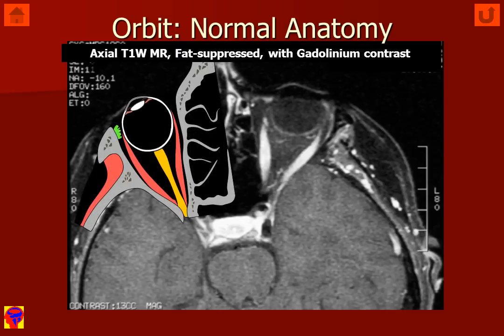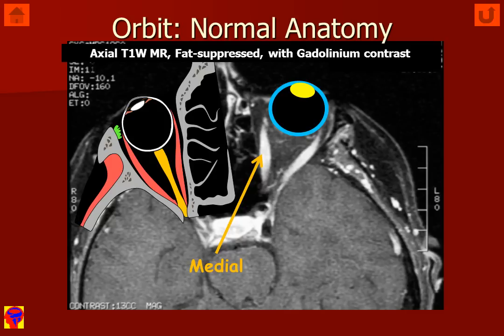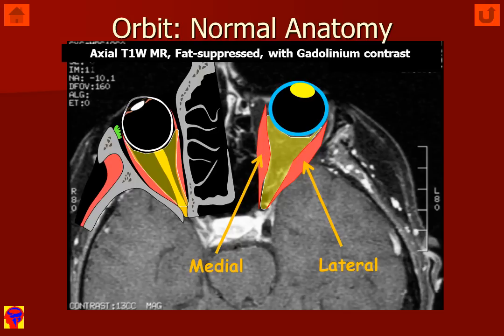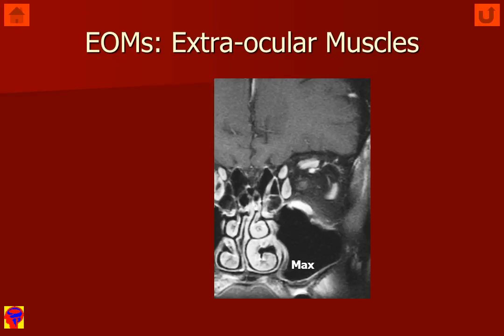Superimposed, we have a drawing of the patient's orbit. We can see the globe and the lens of the eye, the medial and the lateral rectus muscles. In between the rectus muscles, we have the intraconal fat, and passing through the center of the intraconal fat will be the optic nerve and its meningeal sheath.